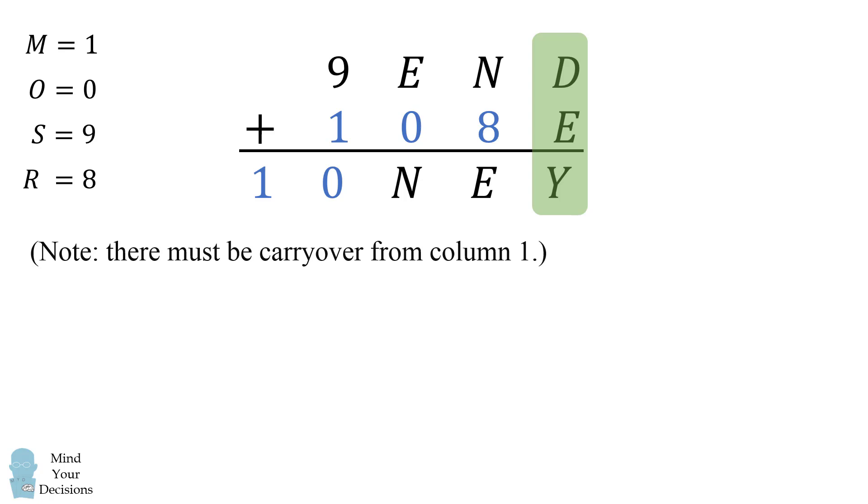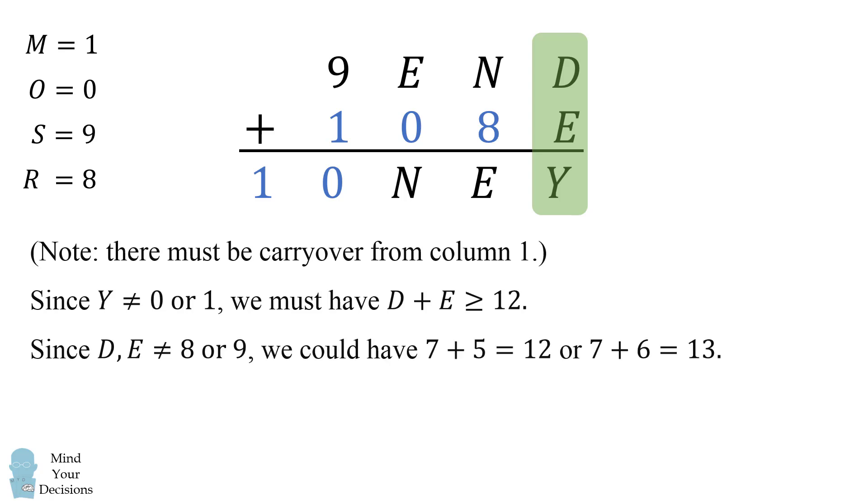So we look at column 1. Since Y cannot equal 0 or 1, those digits are already used, we must have D plus E is greater than or equal to 12. Now since D and E cannot be equal to 8 or 9, because those digits are used, we only have a couple possibilities. We could either have 7 plus 5 is equal to 12, or we could have 7 plus 6, which is equal to 13. So one of the digits E is equal to 7 or D is equal to 7.